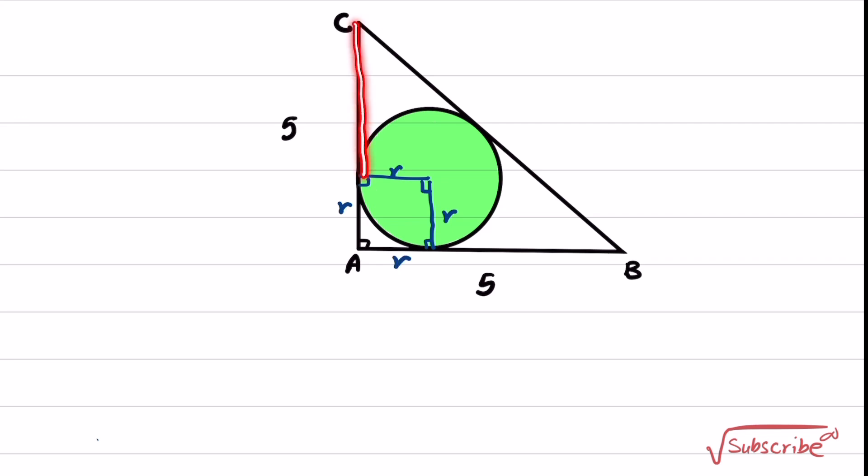We know that this part and this part are equal to 5 minus r and 5 minus r. So let me write them down. I write here, this part is 5 minus r and this part also 5 minus r.